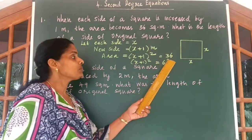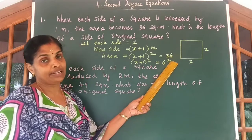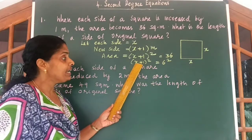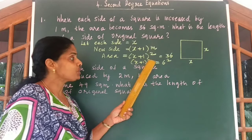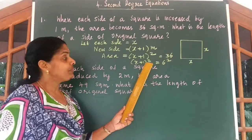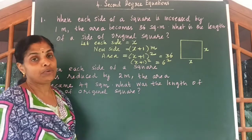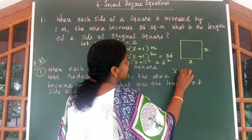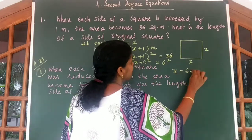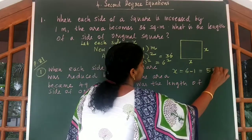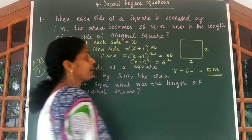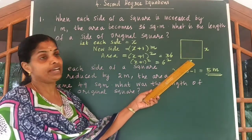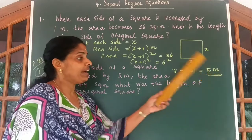Now remove the square on both sides. Then you will get X plus 1 is equal to 6. Therefore, X is equal to 6 minus 1, which is equal to 5 meters. So the side of the original square is 5 meters.